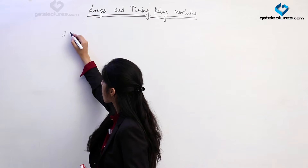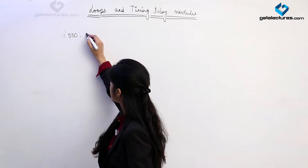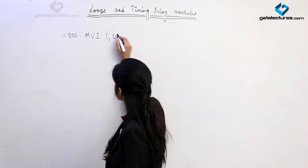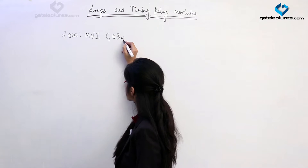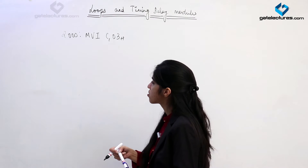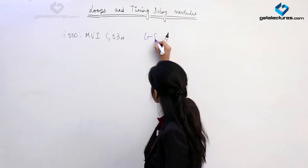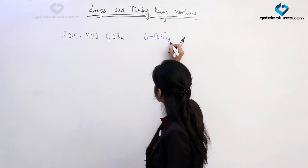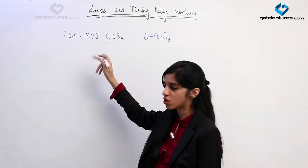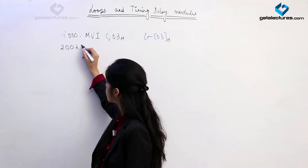Suppose there is a program which starts with memory location 2000. I give a simple instruction MVI C, 03H. What this instruction is going to do is simply load C with contents 03. Since this is a two-byte instruction, the next instruction is going to begin from address 2002.